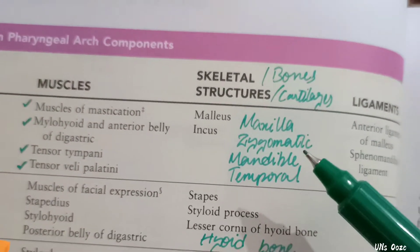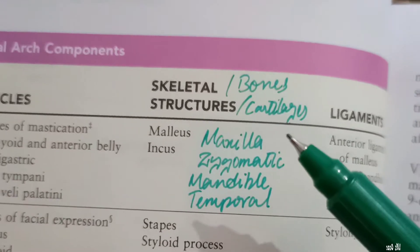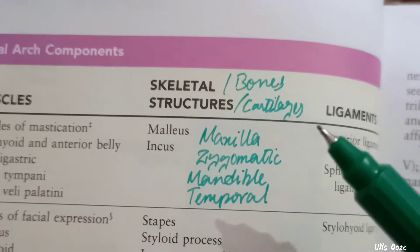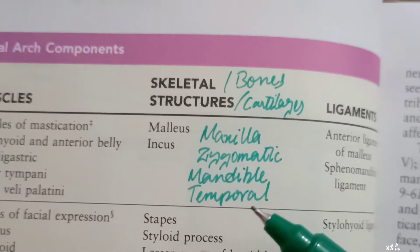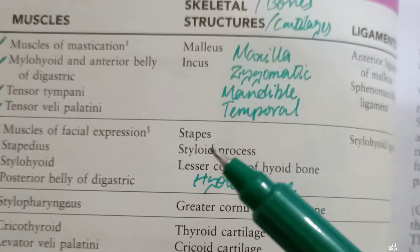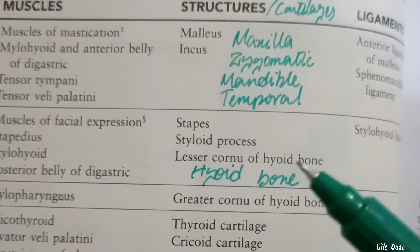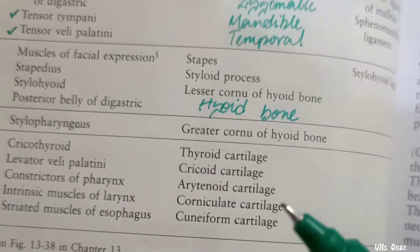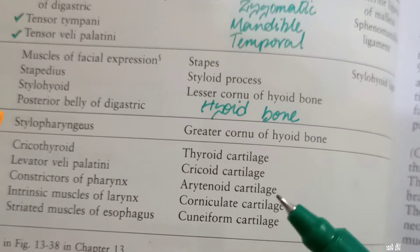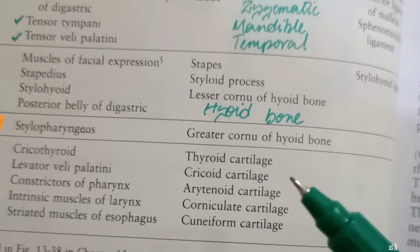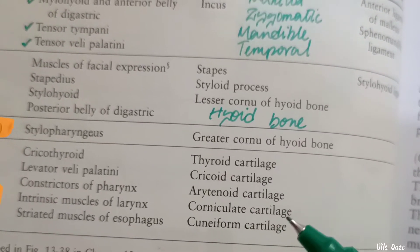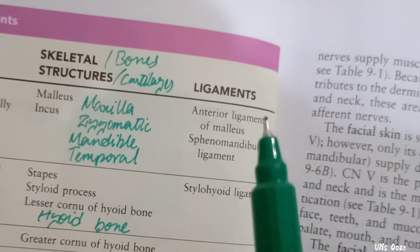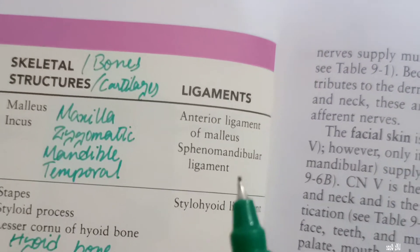For skeletal structures: the first pharyngeal arch gives rise to the malleus, incus, maxilla, zygomatic, mandible, and temporal bone. The second pharyngeal arch gives the lesser cornu of the hyoid bone. The third pharyngeal arch gives the greater cornu of the hyoid bone. The fourth pharyngeal arch gives laryngeal cartilages: thyroid cartilage, arytenoid cartilage, and cuneiform cartilage. For ligaments: the first arch gives the anterior ligament of malleus and sphenomandibular ligament; the second gives the stylohyoid ligament.